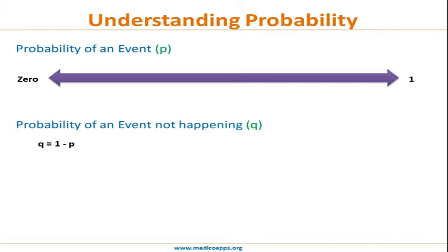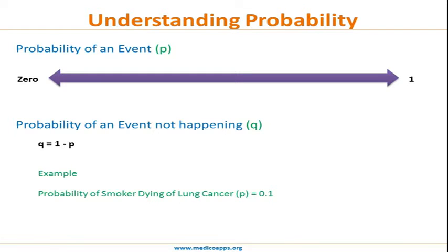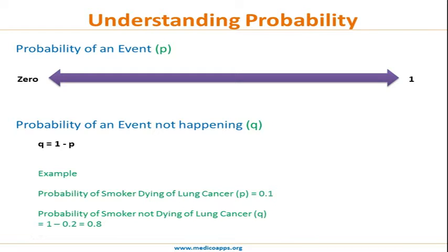The probability of an event not happening is denoted by small q, where q equals one minus p. For example, if the probability of a smoker dying of lung cancer is 0.1 — that is a 10% chance — then the probability of a smoker not dying of lung cancer is q, which is 1 minus 0.1, equal to 0.9.